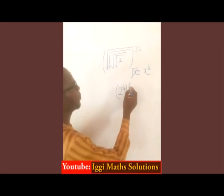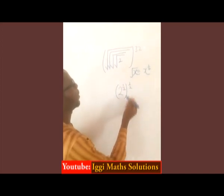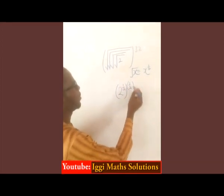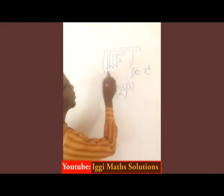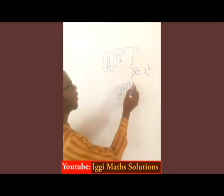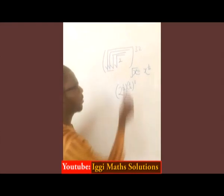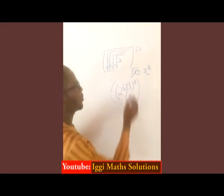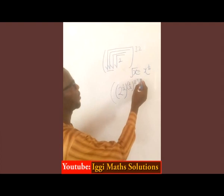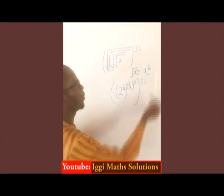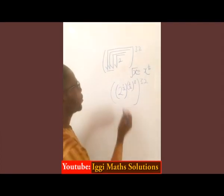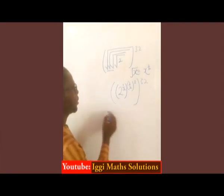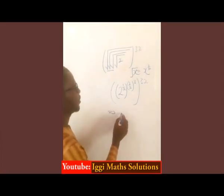Then, averaging in the rest of 2, 1/2. Then we have 3 roots here, so averaging in the rest of 2, giving us 3. Then outside we have raised to 32.